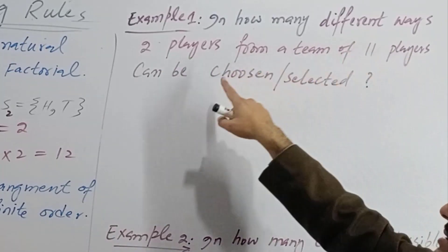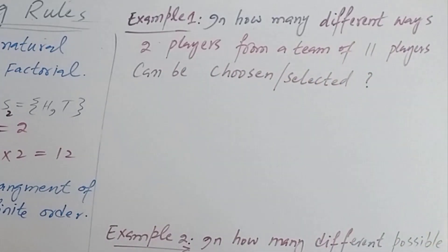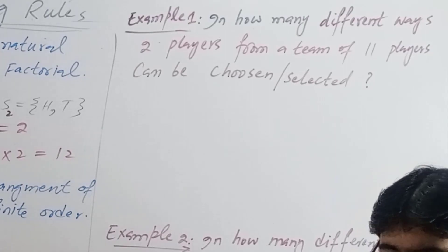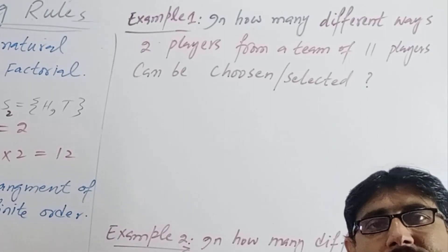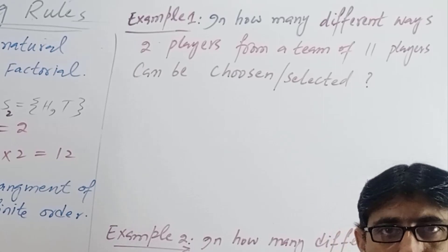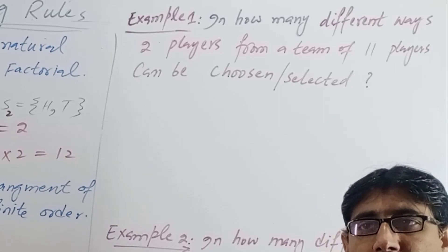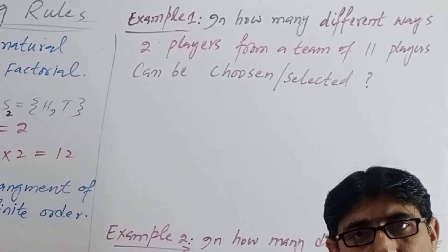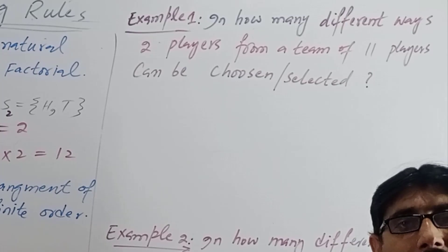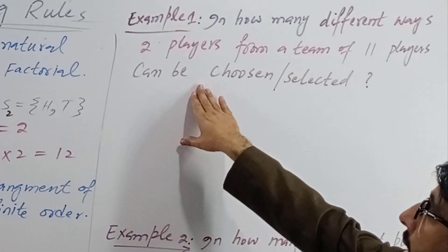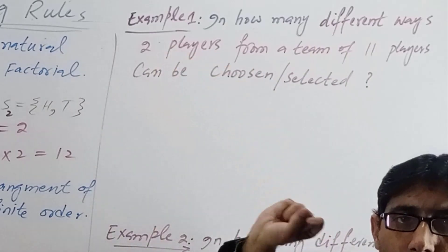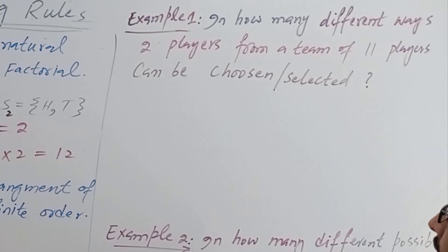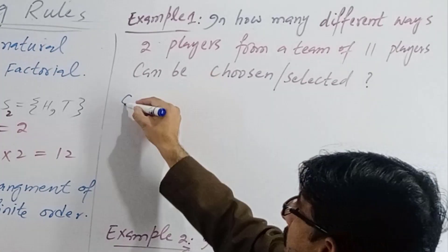Example: Two players from a team of eleven players are to be chosen. In this question, from eleven people, we need to select any two. There is no specification like 'this person first, that person second' — there is no order here. We just choose two from eleven.